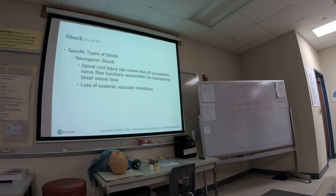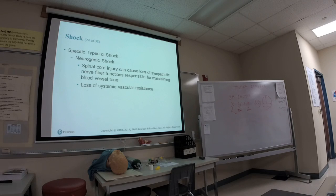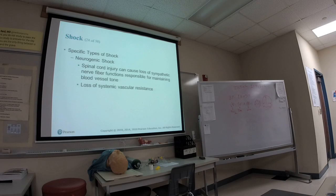Neurogenic shock involves the same process of vasodilation, but it's caused by a spinal cord injury. In neurogenic shock, the patient loses systemic vascular resistance — they lose sympathetic tone to the vessels. Normally, the sympathetic nervous system causes vasoconstriction. Loss of that sympathetic tone causes the vessels to dilate.